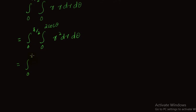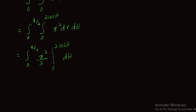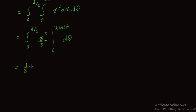We evaluate the inner integral first. With θ from 0 to π/2, we integrate r squared dr from 0 to 2 cos θ, giving r cubed over 3 evaluated from 0 to 2 cos θ, which yields (1/3) times the integral from 0 to π/2 of (2 cos θ) cubed dθ.